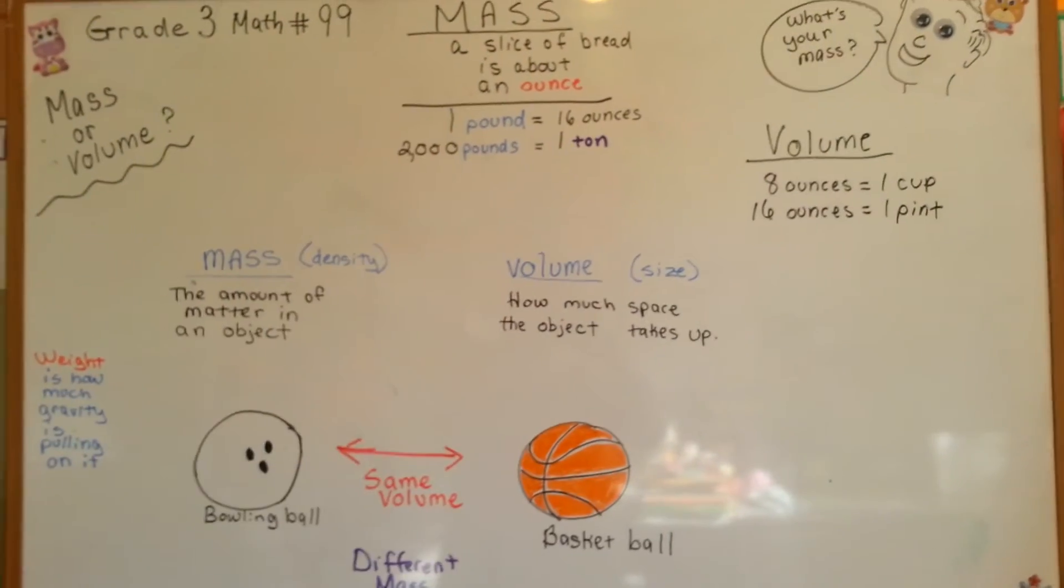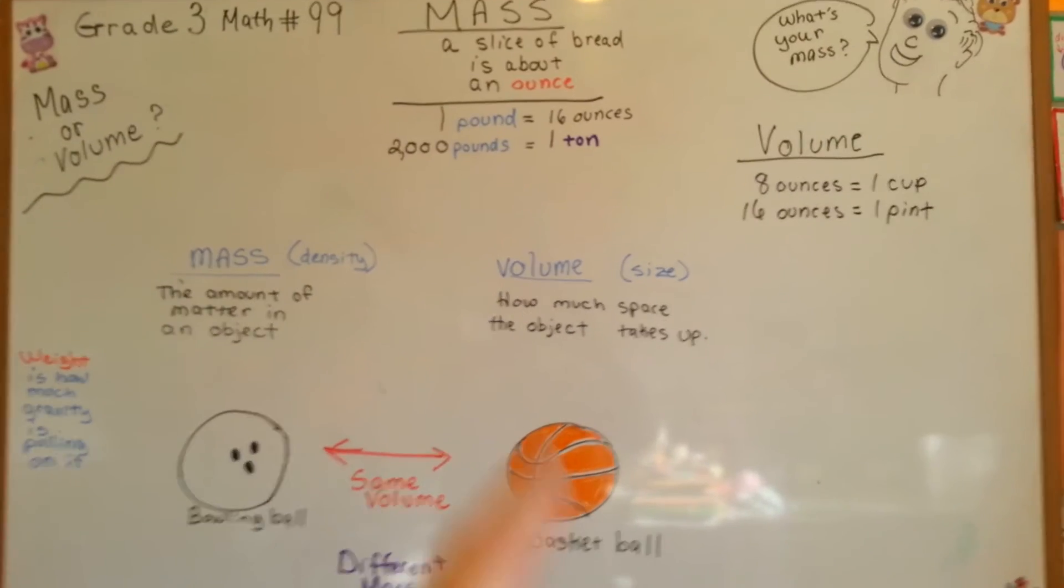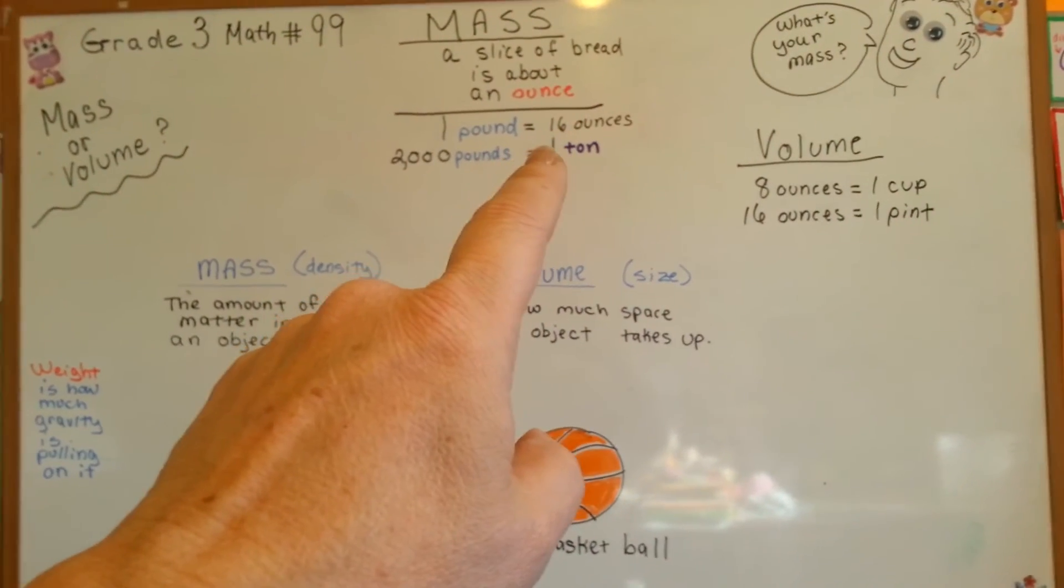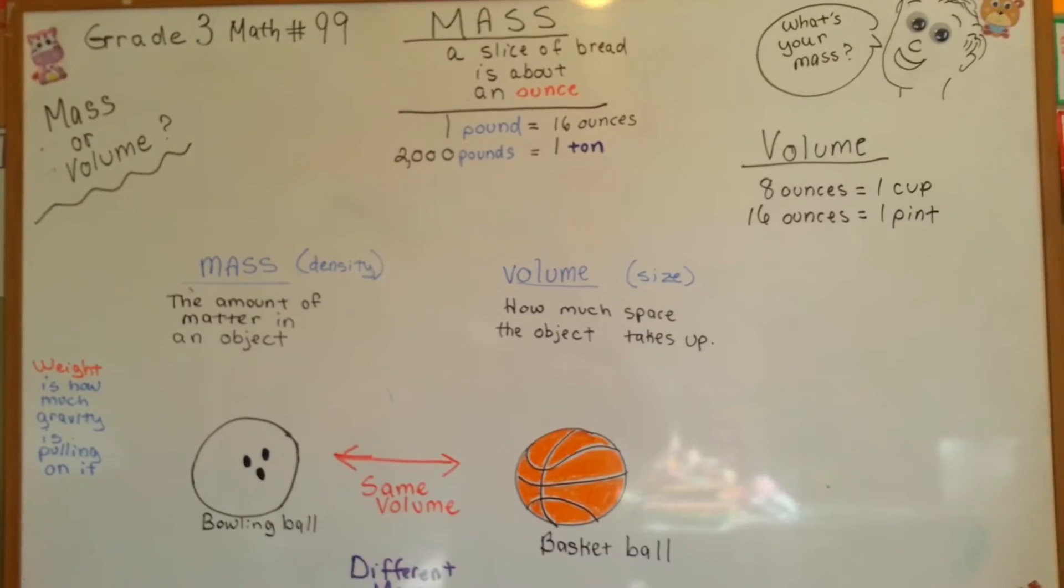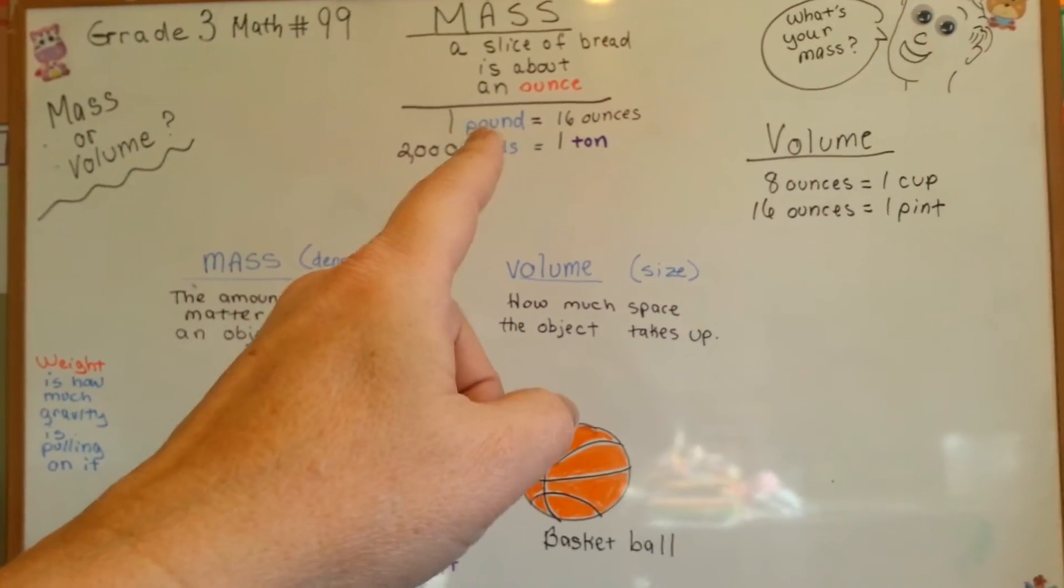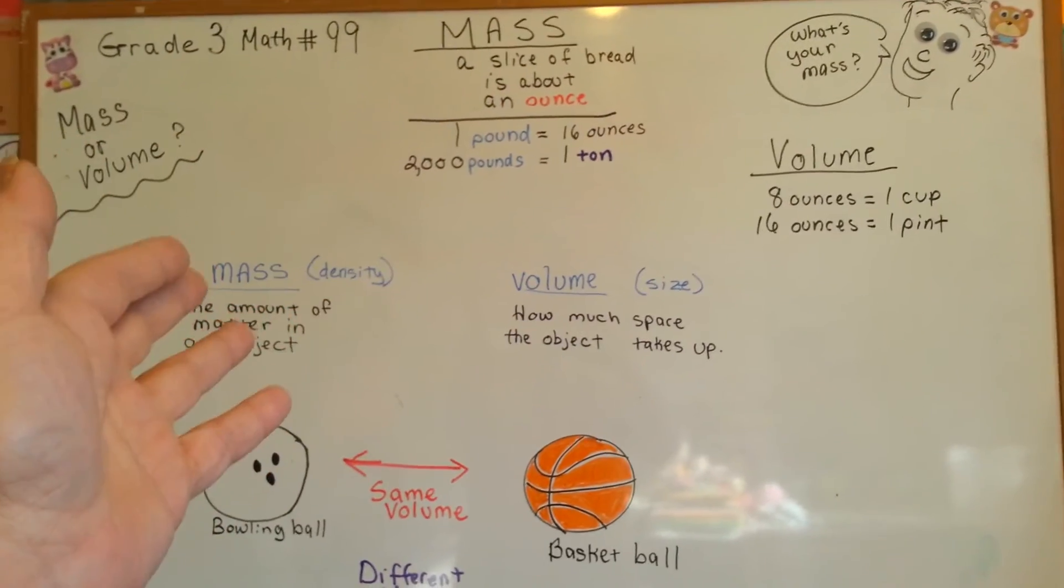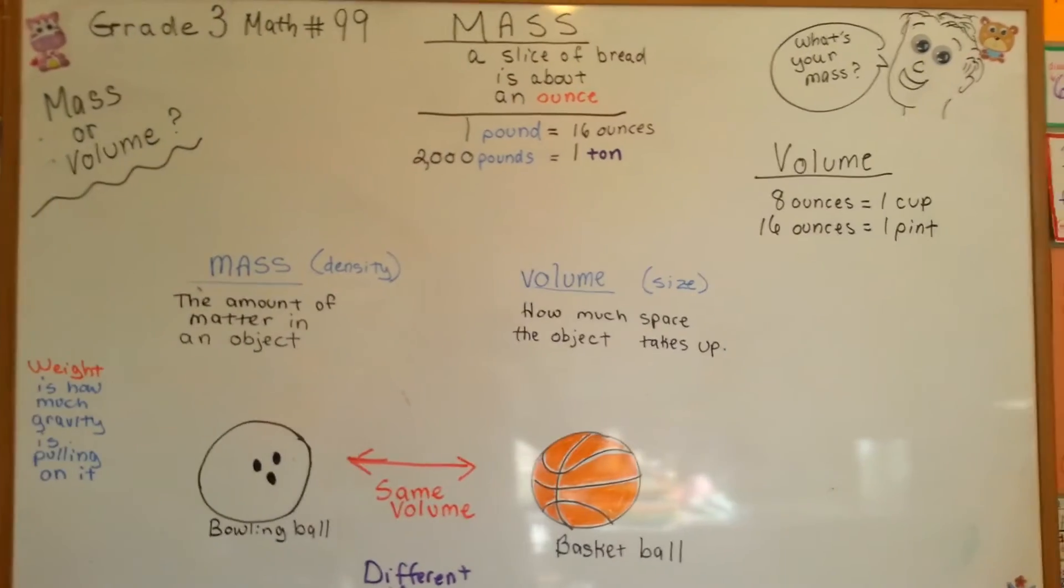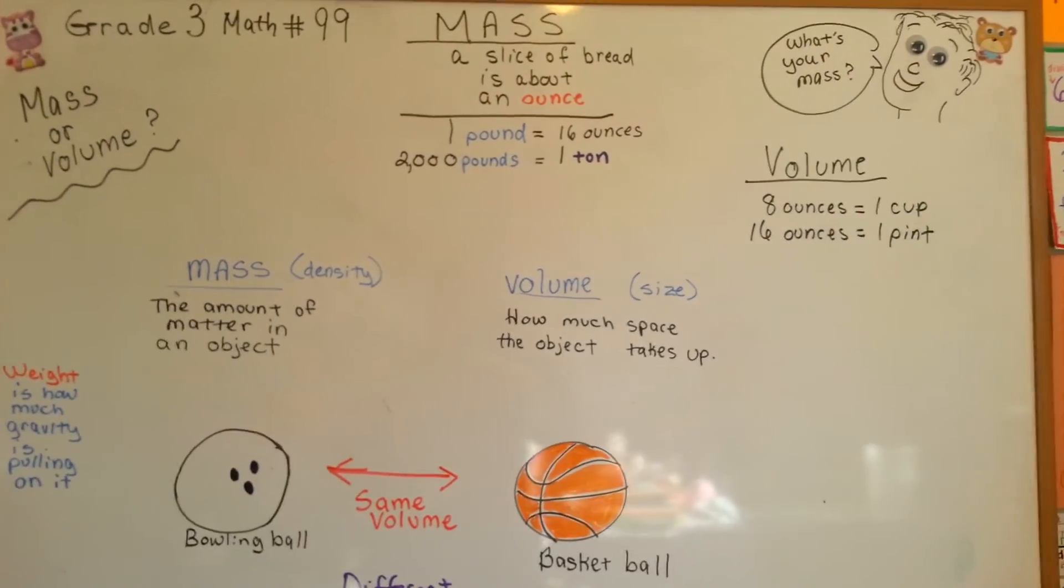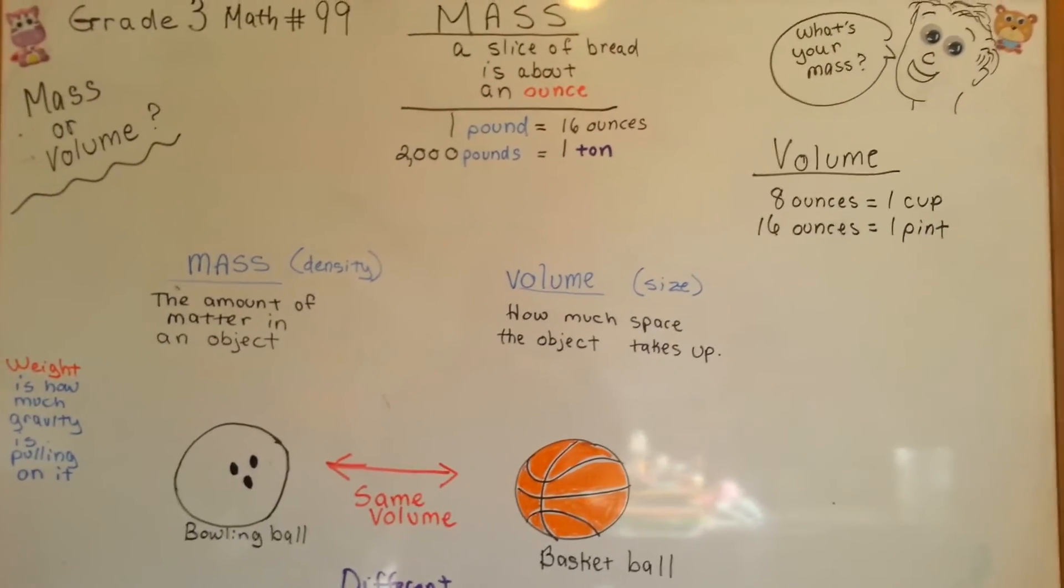You can go online and find charts and it'll tell you that it might be closer to 20 or 22 ounces for a pound. It depends on what the object is. You'll see charts that say a pound of rice is a different amount than a pound of noodles.